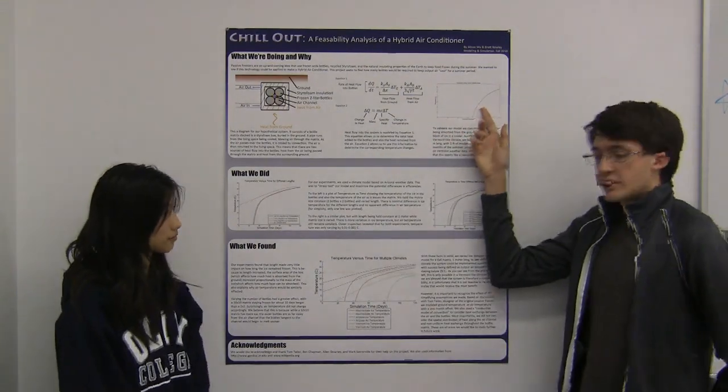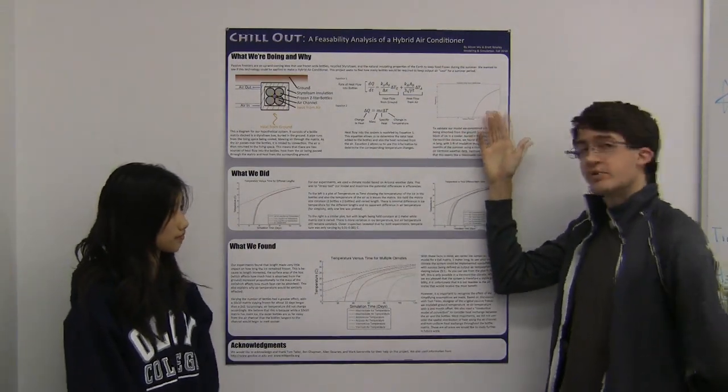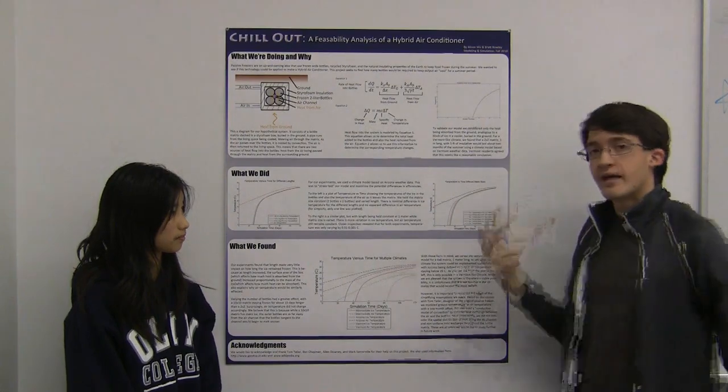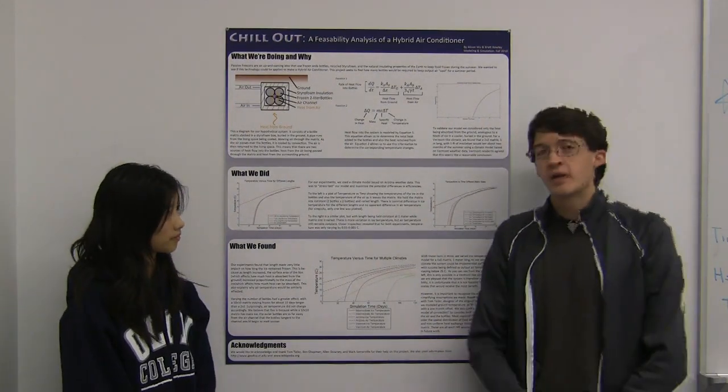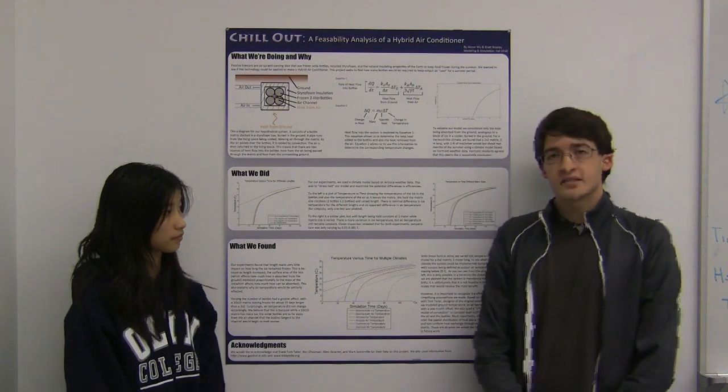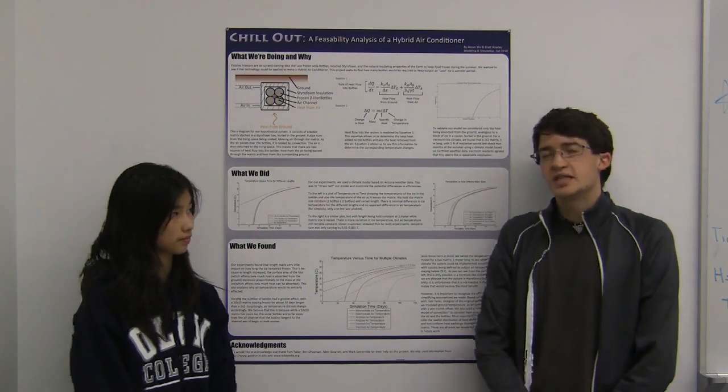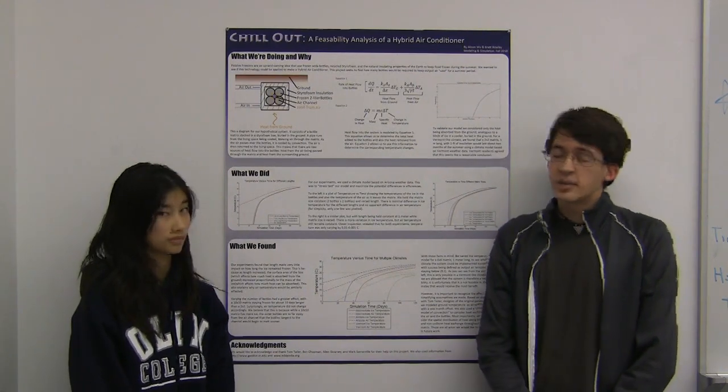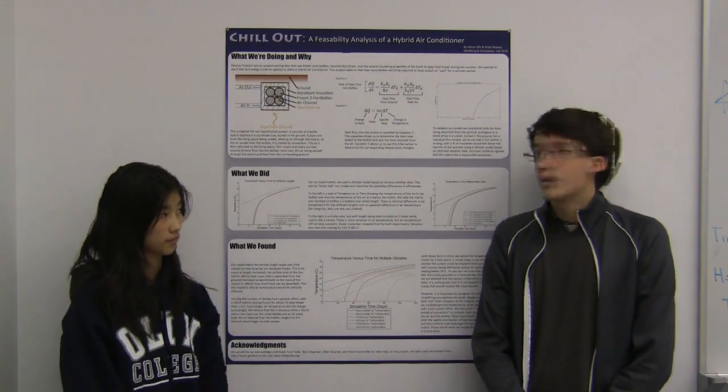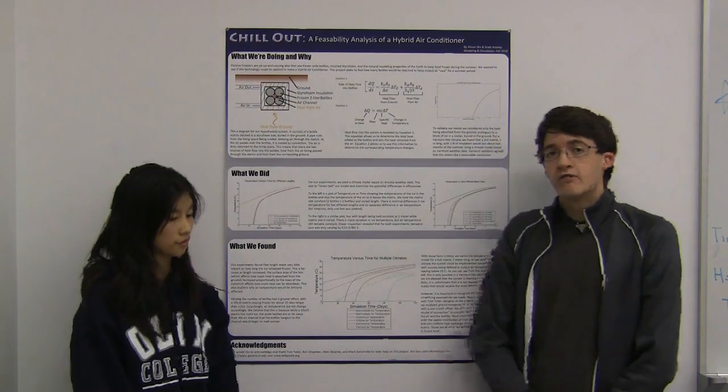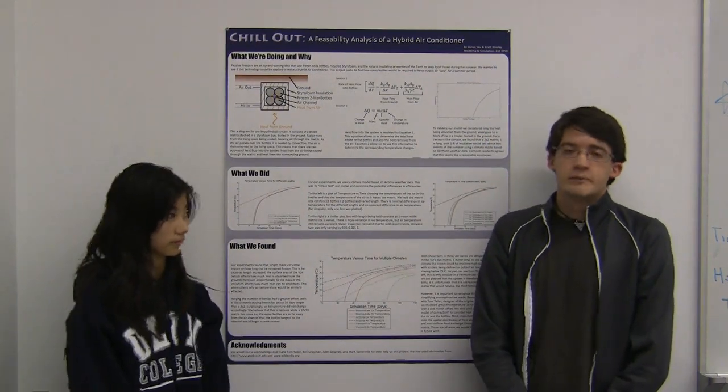This graph validates our model by showing how the temperature of a 2x2 matrix changes over time without any air circulation. Effectively, it suggests that a 29 kilogram block of ice in a one foot thick styrofoam box, where it's sufficiently deep in the ground as to experience no daily temperature fluctuation, would remain frozen in a Vermont-like climate for about two months. Vermont residents told us that this seemed a reasonable conclusion.